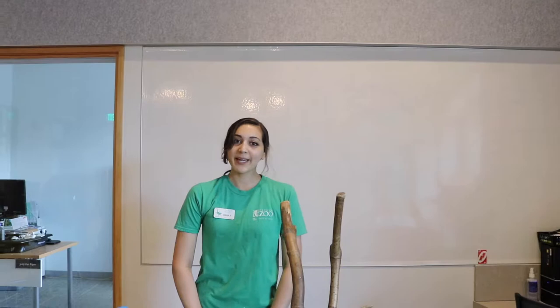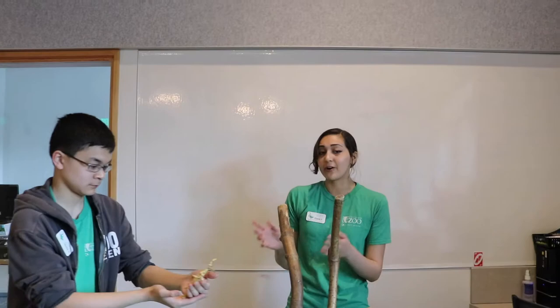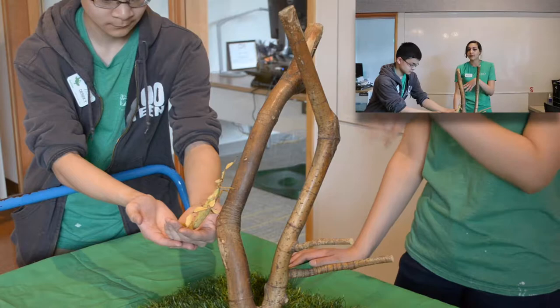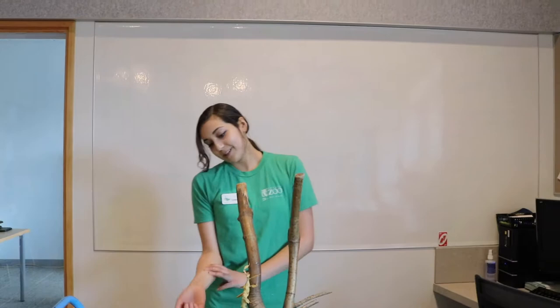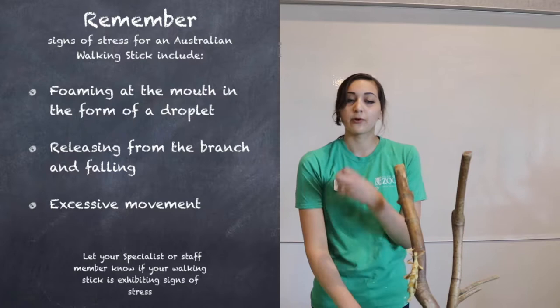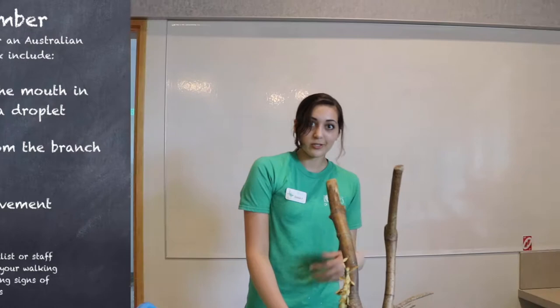Here we have an Australian walking stick. An animal specialist will always be here to put the walking stick on and off the perch for you. So your main responsibility is just going to be monitoring it and making sure it doesn't fall off or climb onto visitors. As with all animals on interp, you're going to be looking out for signs of stress. Signs of stress for these guys include foaming at the mouth, moving around and running a lot, or falling off the branch.